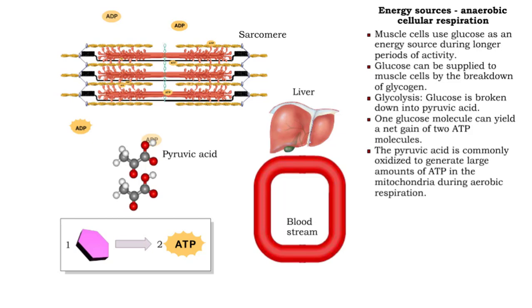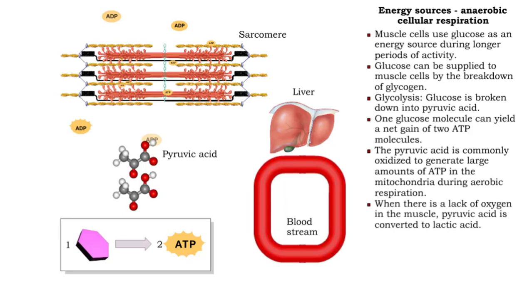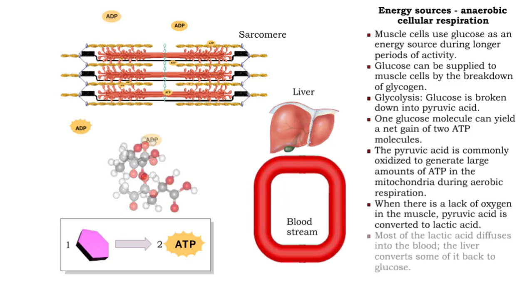Normally, during aerobic respiration, pyruvic acid is oxidized in the mitochondria, producing large amounts of ATP. However, during some activities, not enough oxygen is available to completely break down the pyruvic acid. In such cases, the muscle converts it to lactic acid.